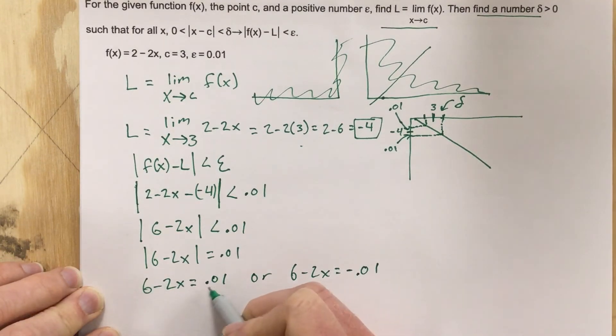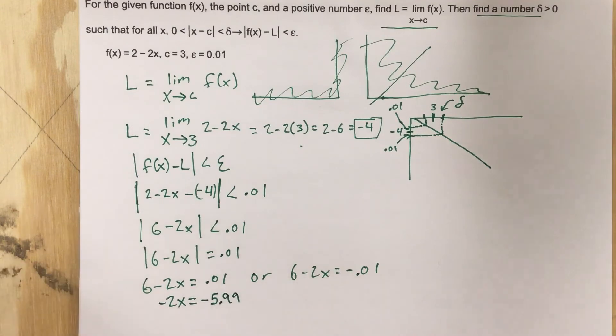Let's subtract 6, we get negative 2x equals, when we subtract 6, we get negative 5.99. We're going to divide by negative 2, and we get 2.995.